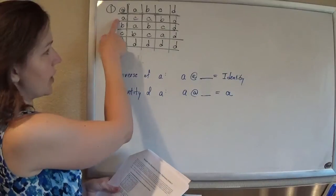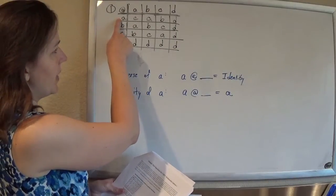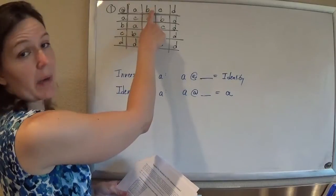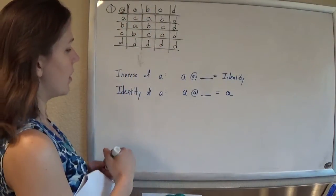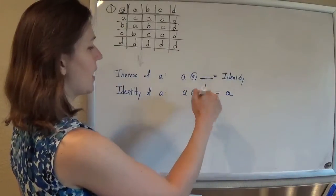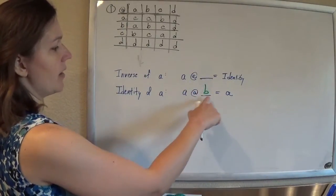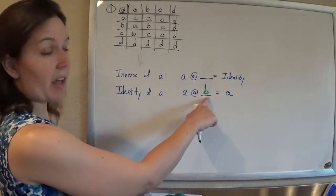So if we look at our chart, if I want A to stay A, I can combine it with B. So A at B gives me A. So because A at B gives me A, then B is my identity element.